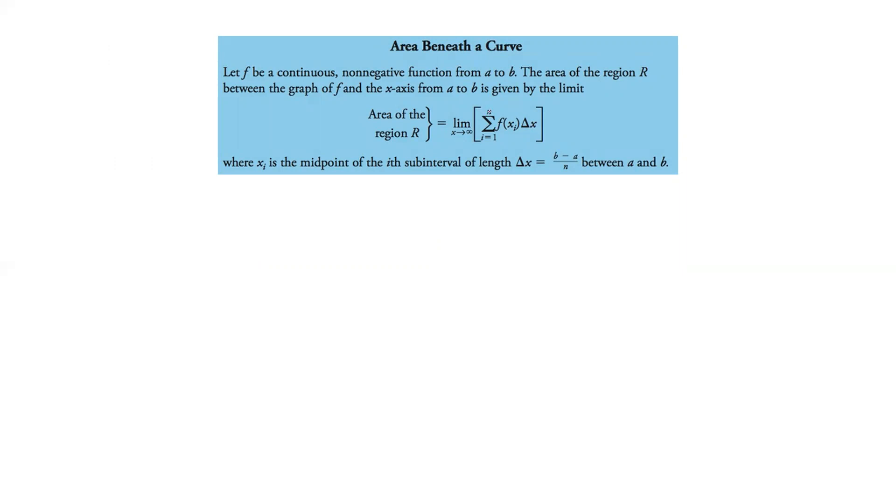And again, we're going from 1 to n. So, the higher the number of n's we use, the closer to actually the area of the region we get. So, if n goes to infinity, we're going to actually get that area of the region pretty exact.